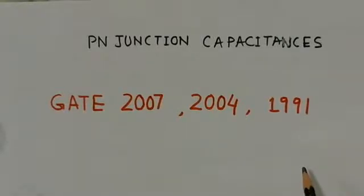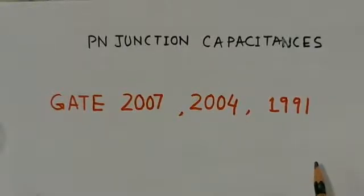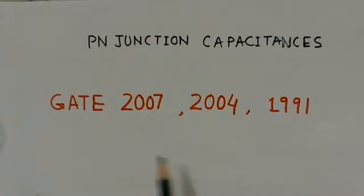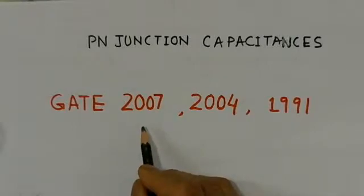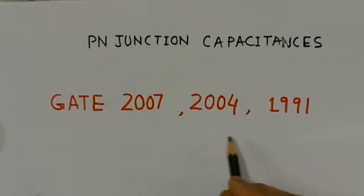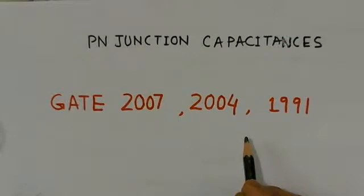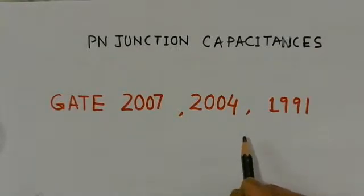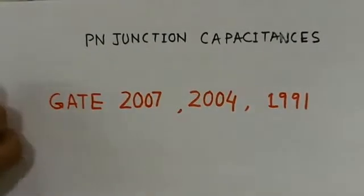This video consists of three GATE problems based on one of the very important PN junction capacitances, which is called depletion capacitance or sometimes junction capacitance. The three problems are from GATE 2007, GATE 2004, and 1991, and all are based on junction capacitance as a function of junction voltage. This capacitance comes into play when the junction is reverse biased.